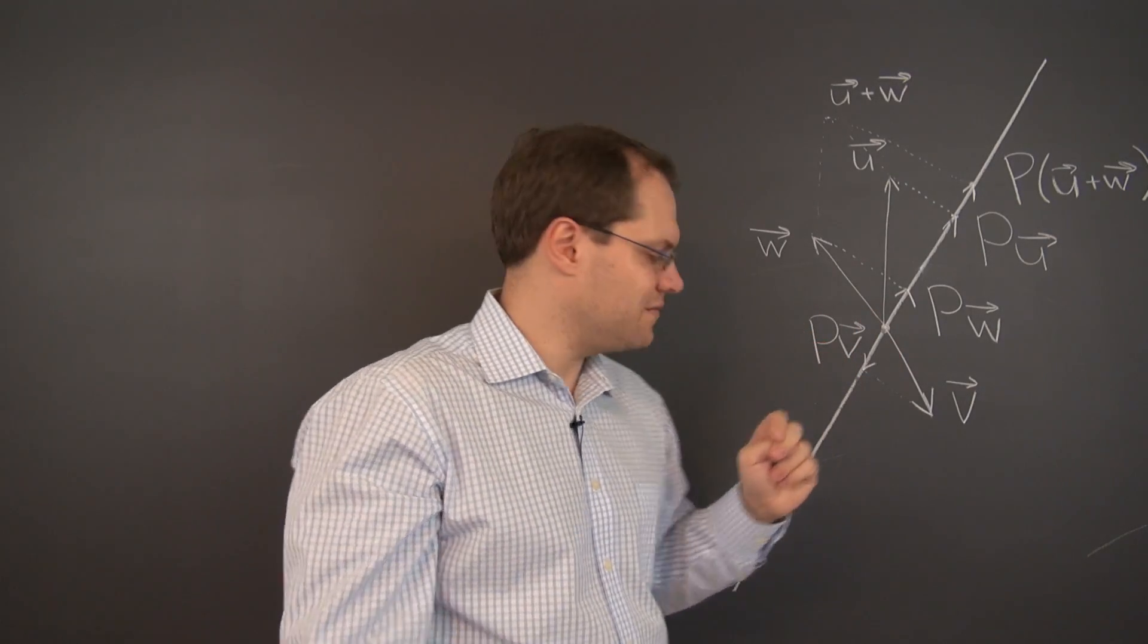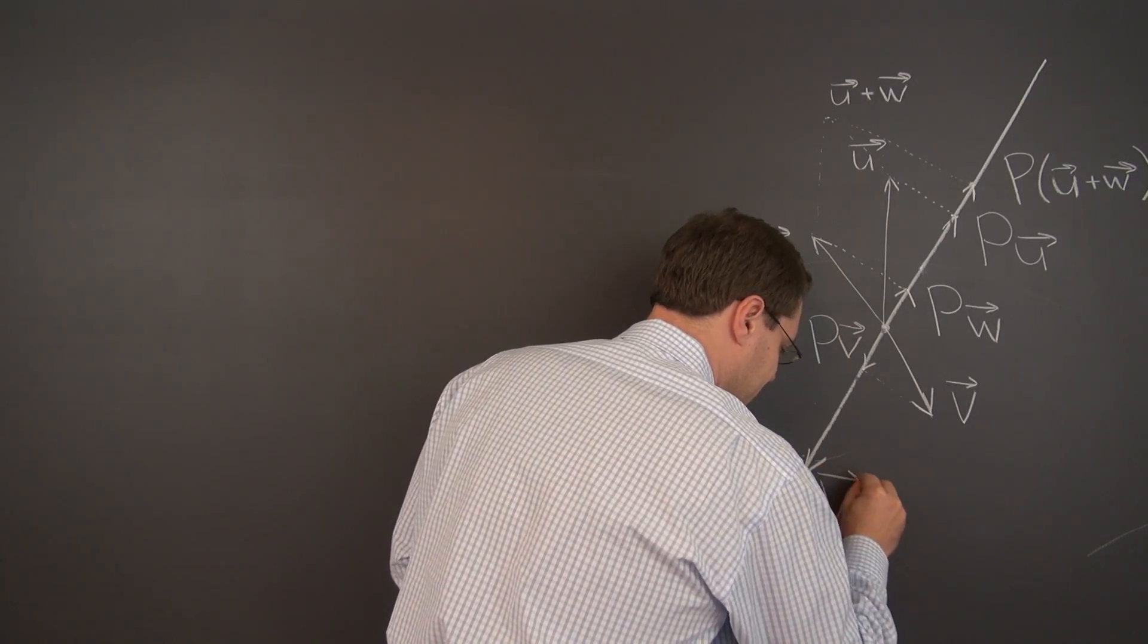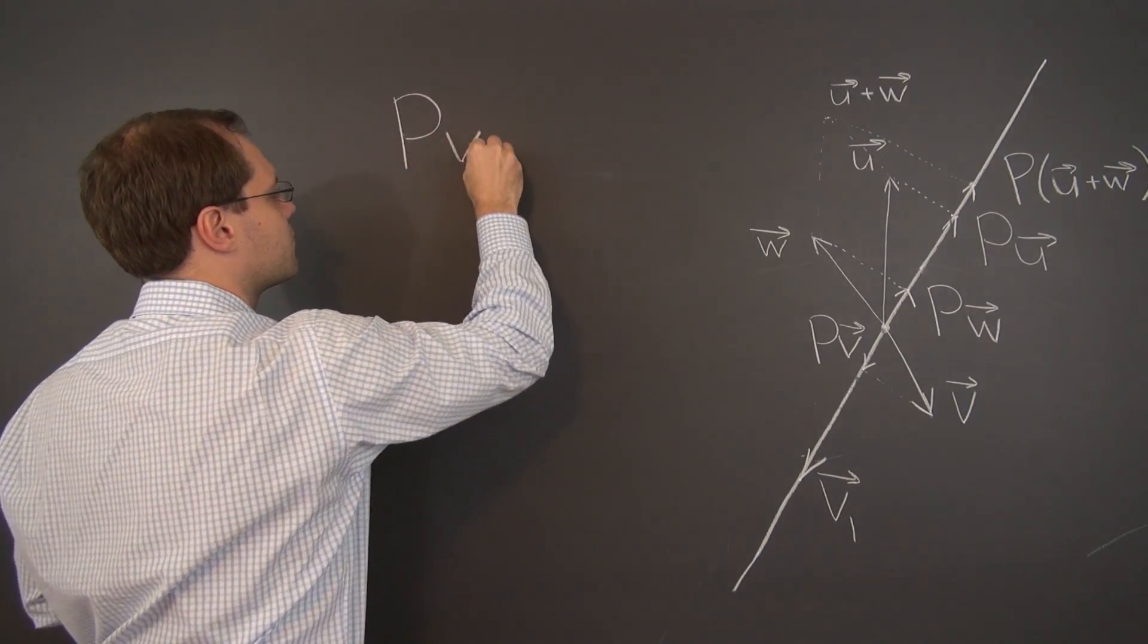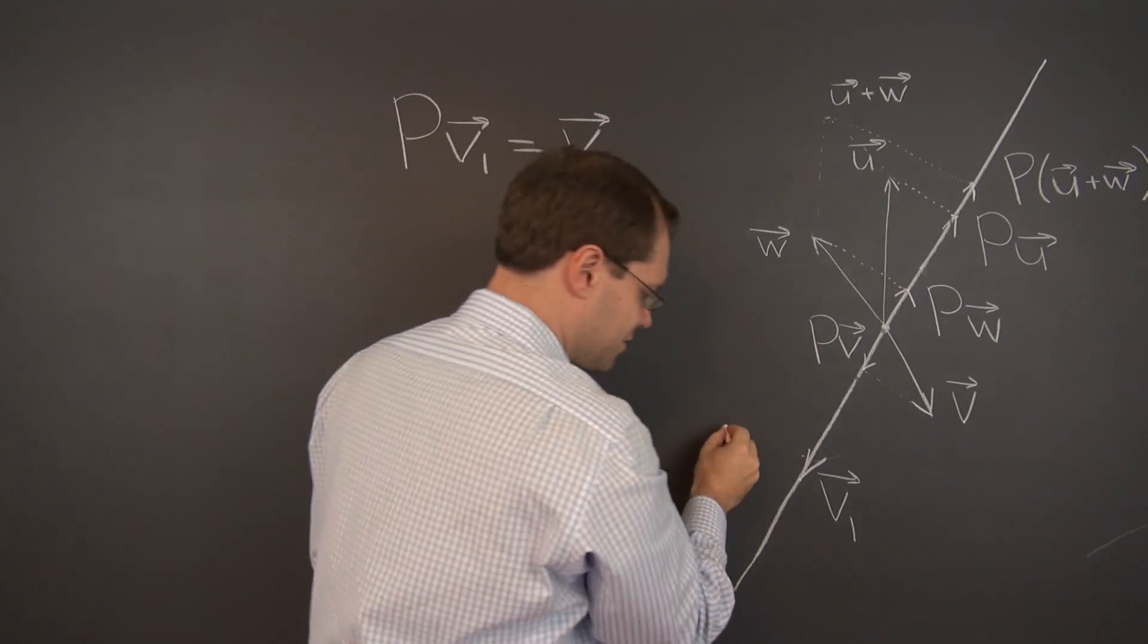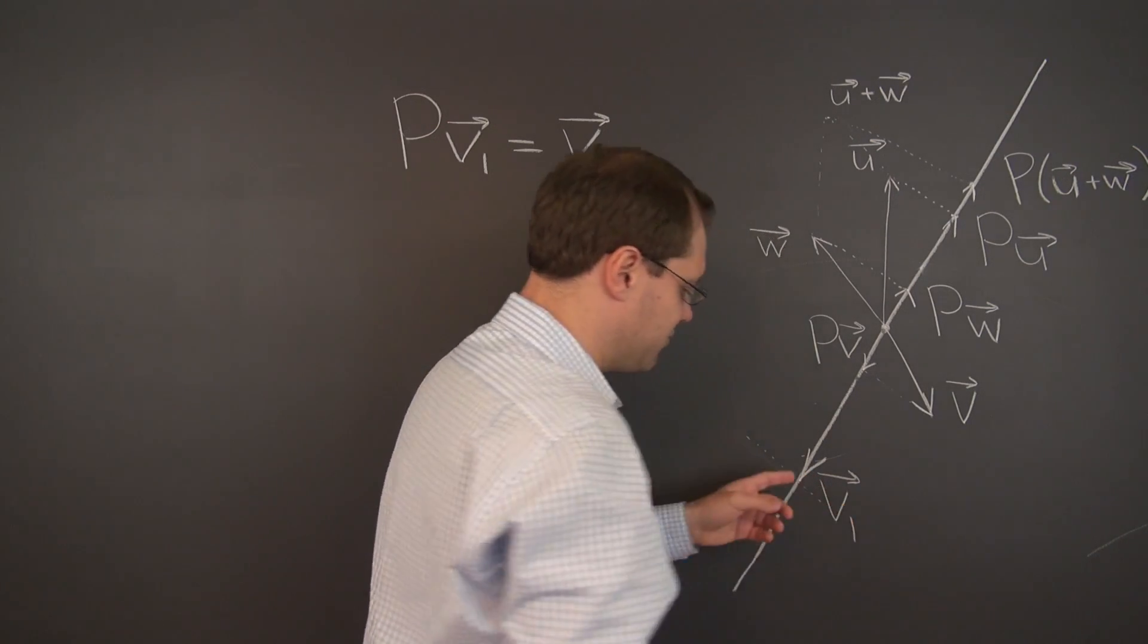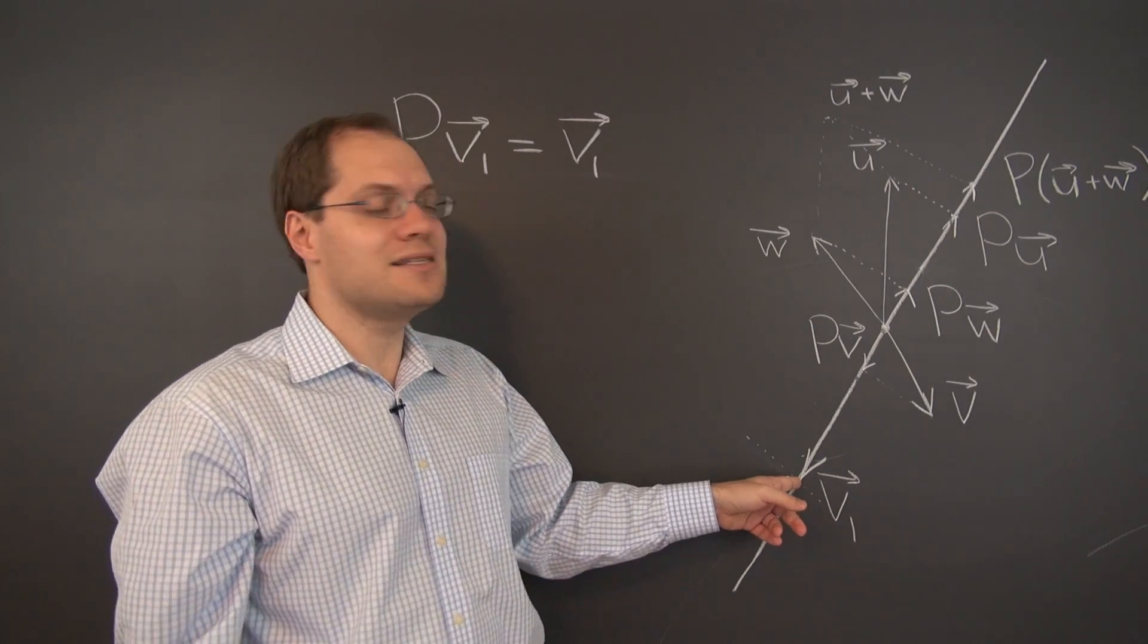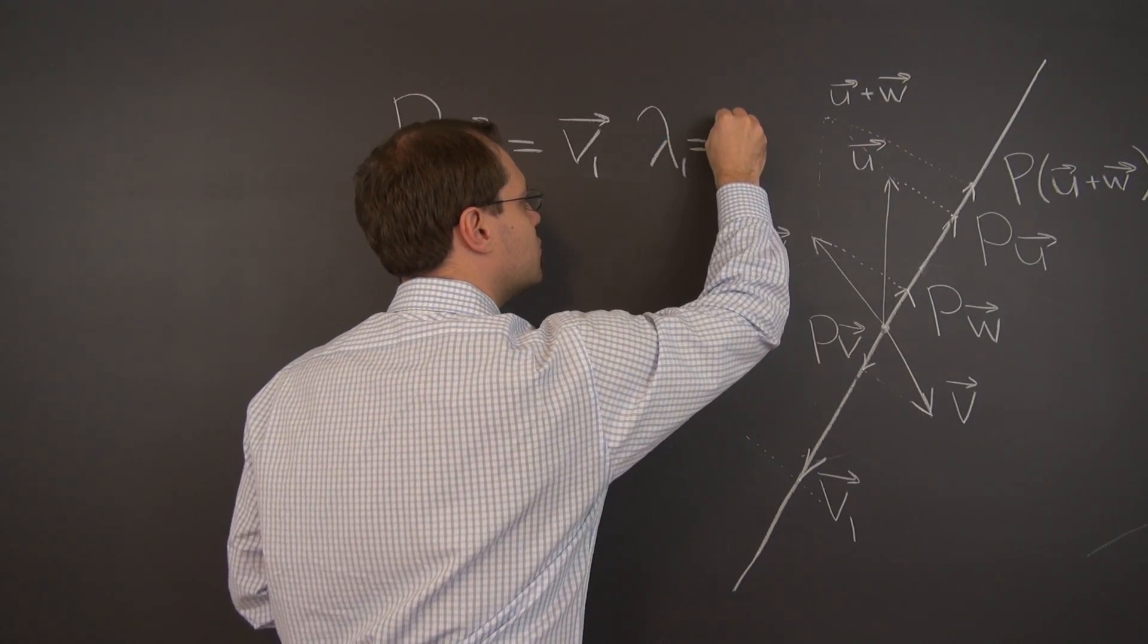So one of the eigenvectors is once again, I'll call it v1, any vector that lies along this projection line. That's because p of v1 equals v1. Let's see that. The recipe is draw a line through the tip of the vector orthogonal to the projection line. And wherever it meets the projection line, that's the image of the vector. So v1 is its own image. Which tells us that the corresponding eigenvalue is 1.